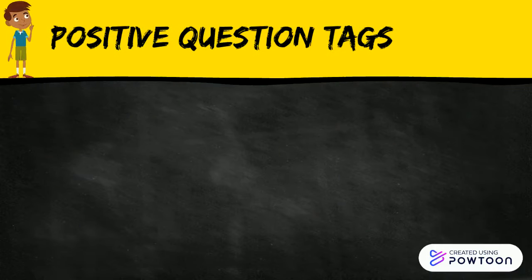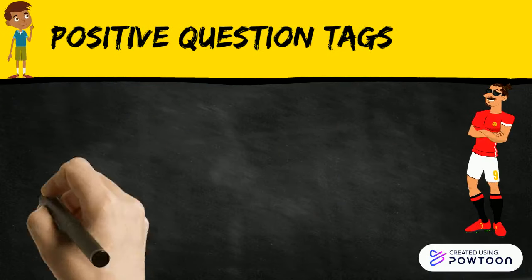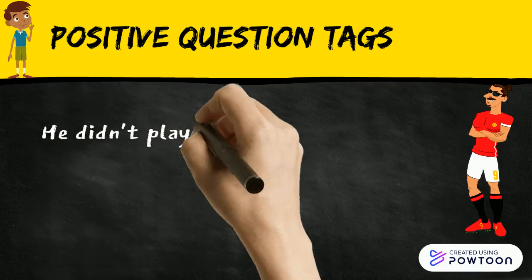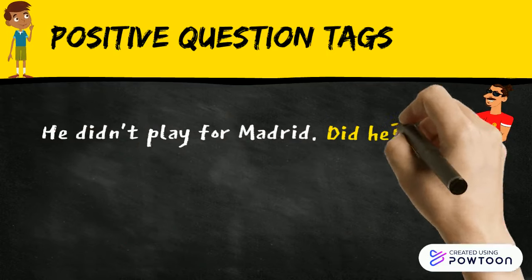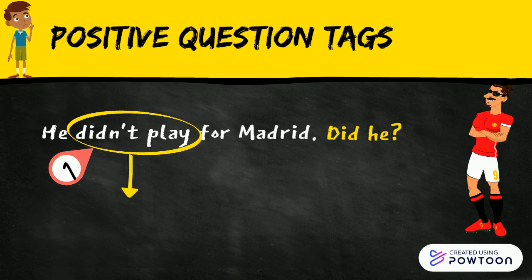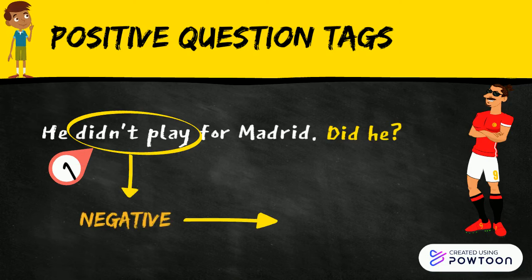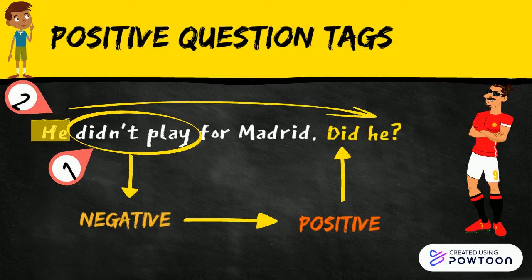When the sentence has a verb in the simple past, we use 'did' plus the subject pronoun to make positive question tags. Just like in this example: 'He didn't play for Madrid, did he?'